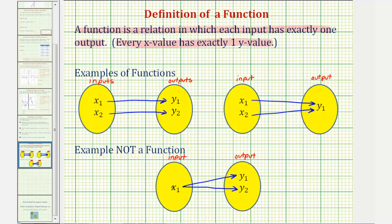Here's an example that's not a function. Notice this input has two outputs, and therefore it's not a function. It's still a relation but not a function.